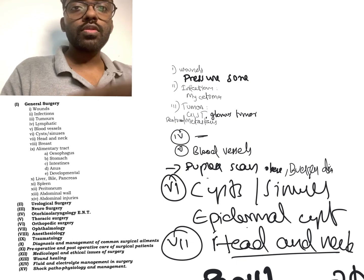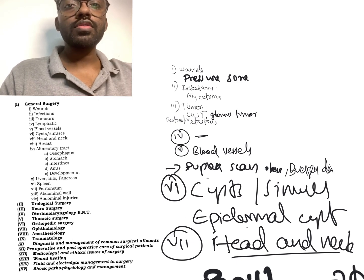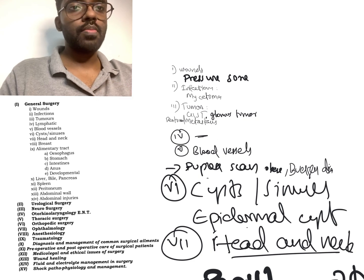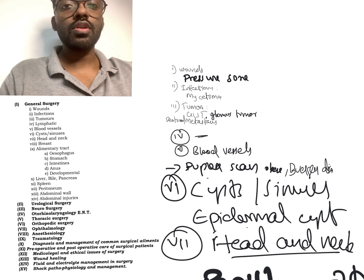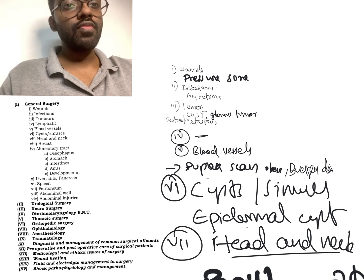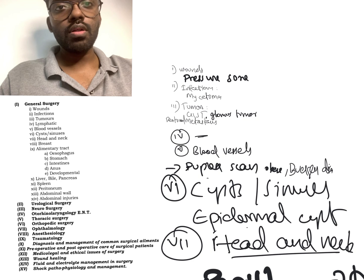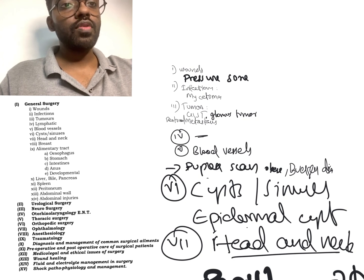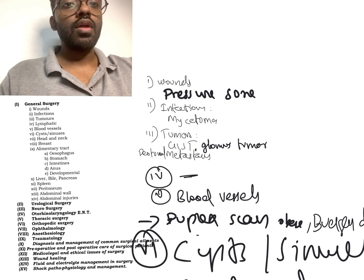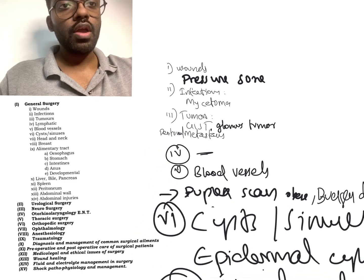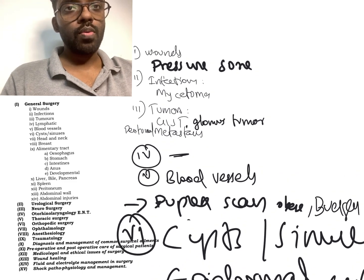Hello everyone. On your left side you can see the actual syllabus for surgery for UPSC CMS, and on the right I have noted down the topics of the UPSC CMS surgery questions of 2022. Starting from general surgery, which is the largest topic consisting of 14 subtopics — from the first topic, wound, a question about pressure sore has been asked, and from the second topic, infection, they asked about mycetoma.